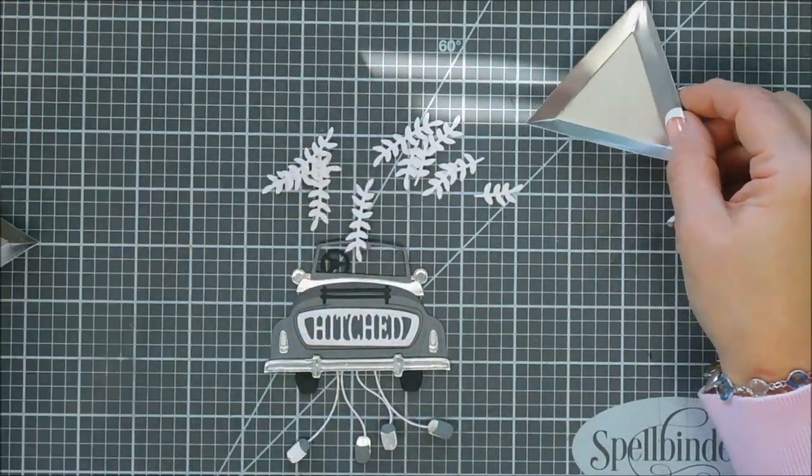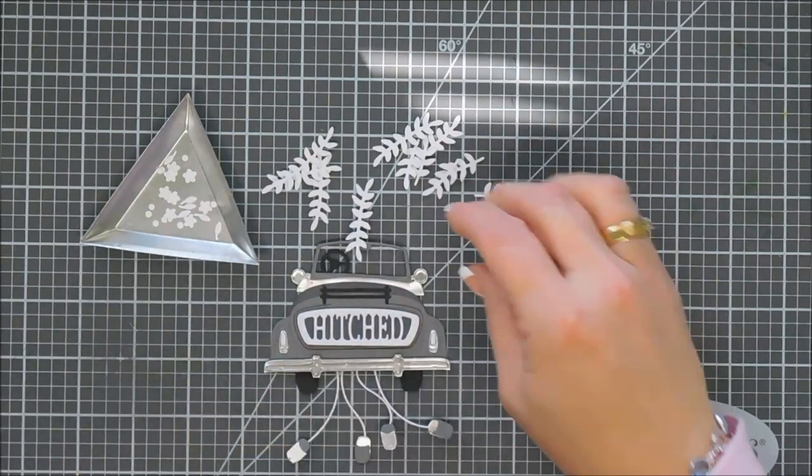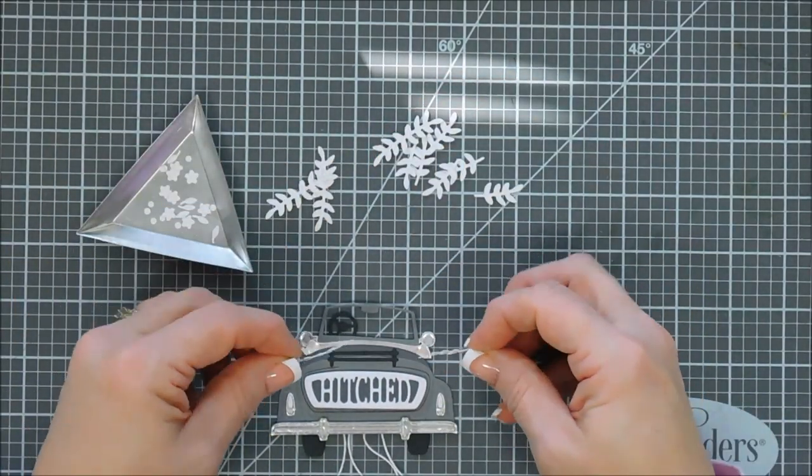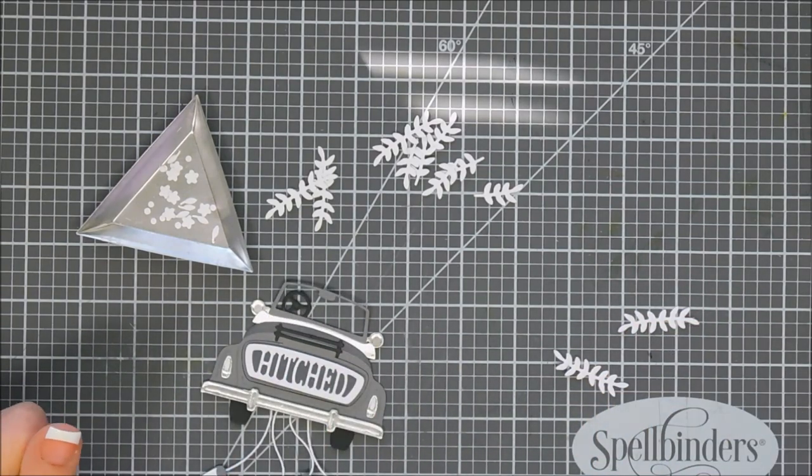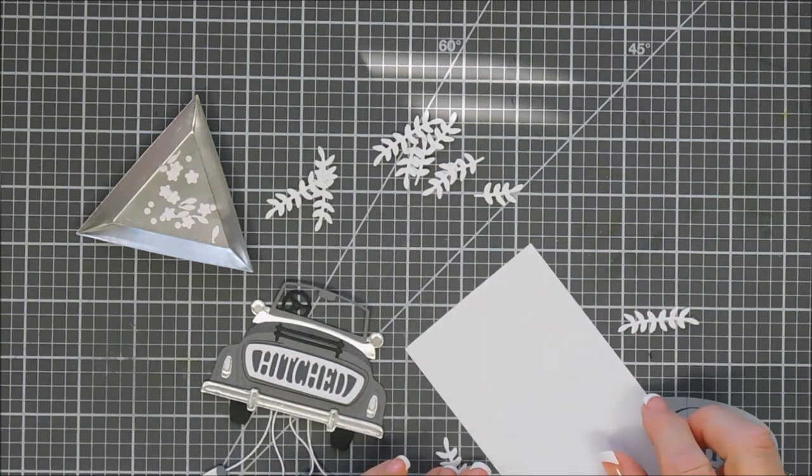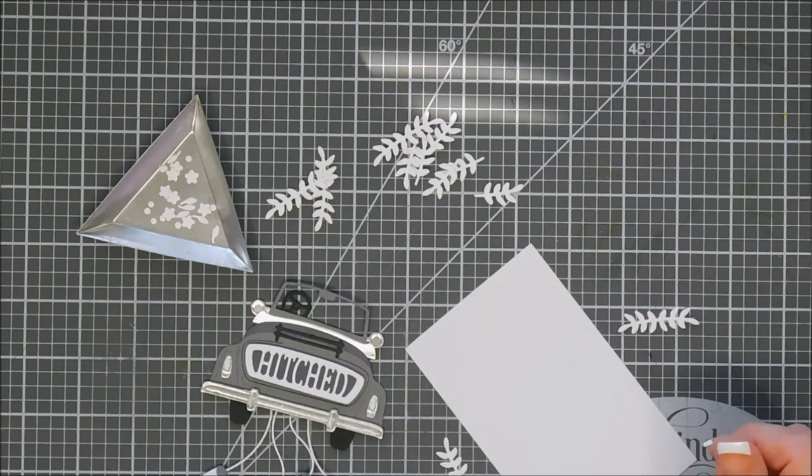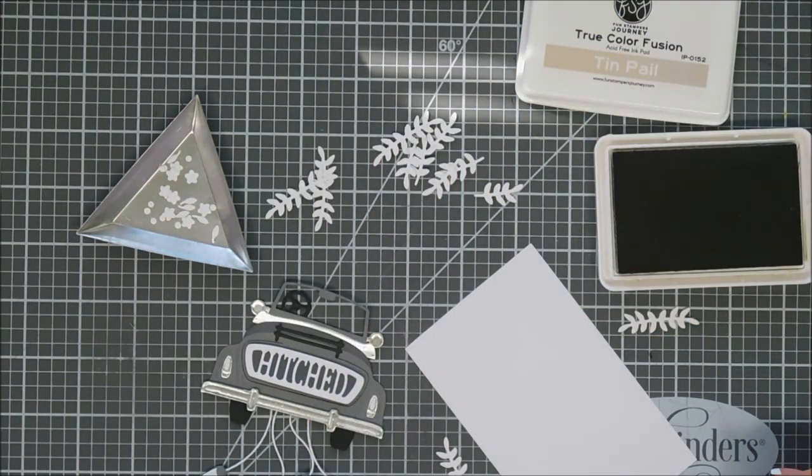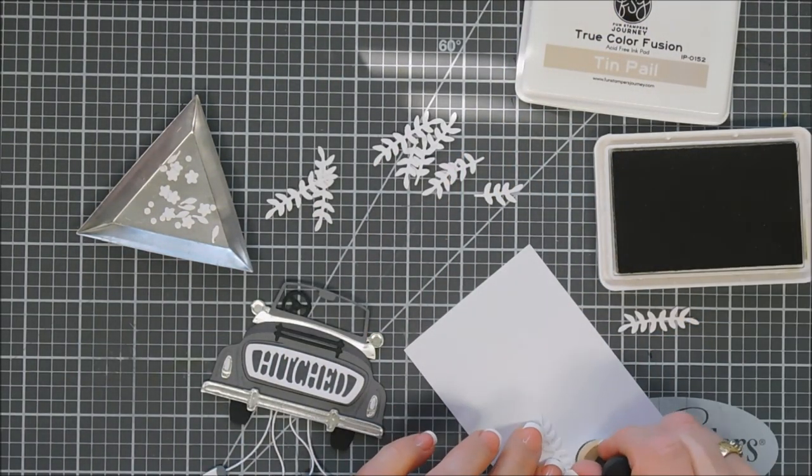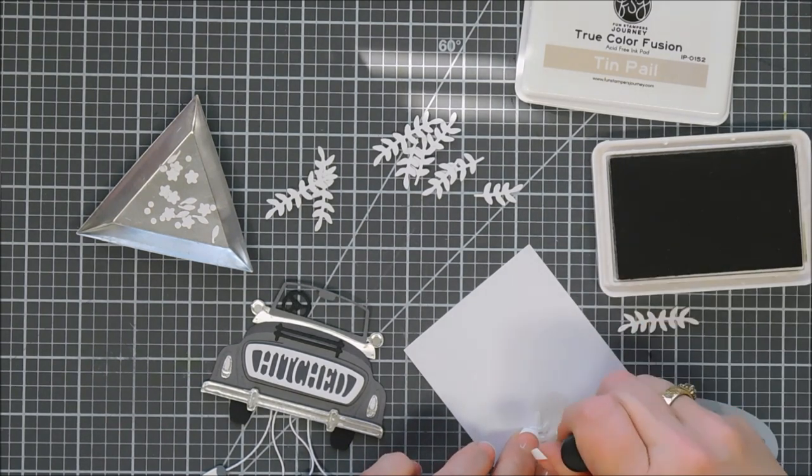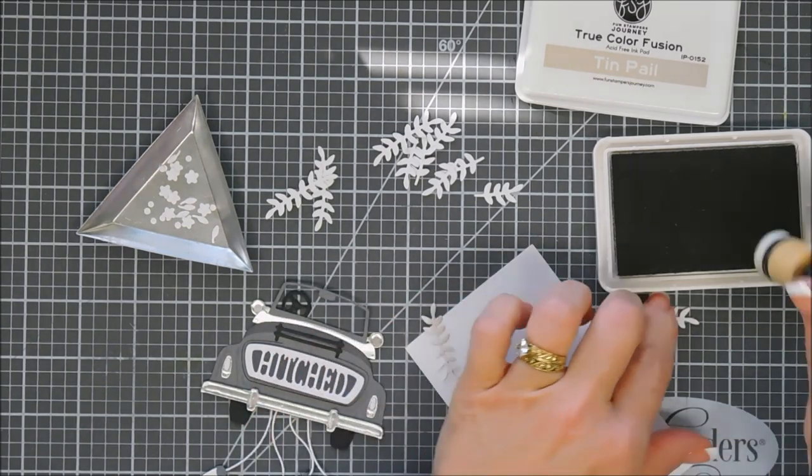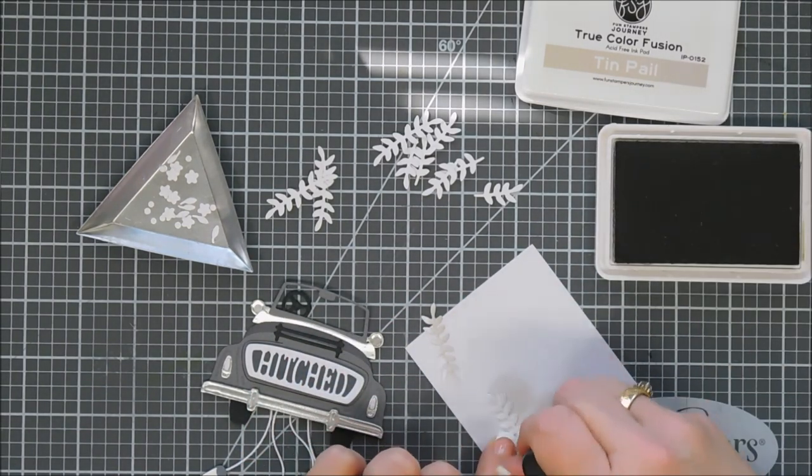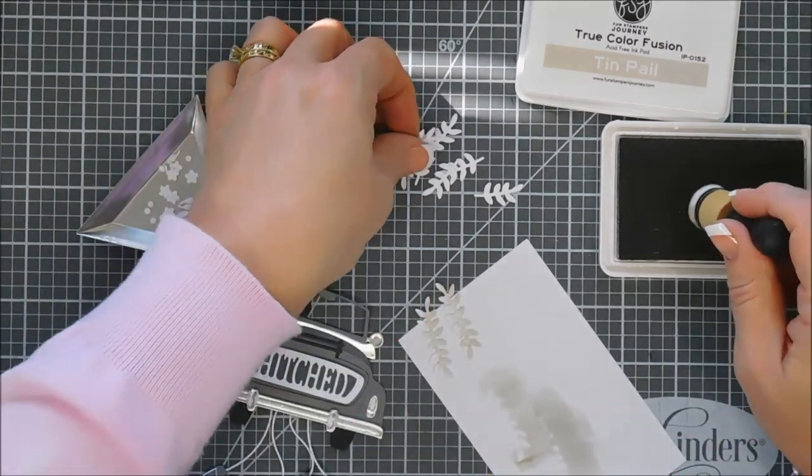Now I have my greenery that is in the Hitched add-on die set. I wanted to add some little foliages above the bumper and then above the Hitched sentiment. But I have my little white flowers die cut out also and I was afraid my white flowers would kind of get lost on the white foliage. Again we're going for a kind of monochromatic look.